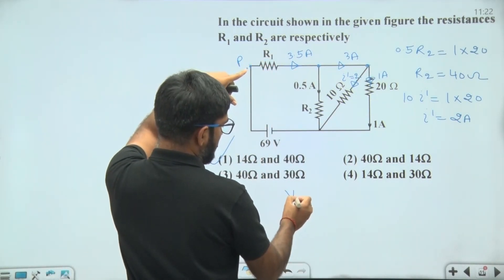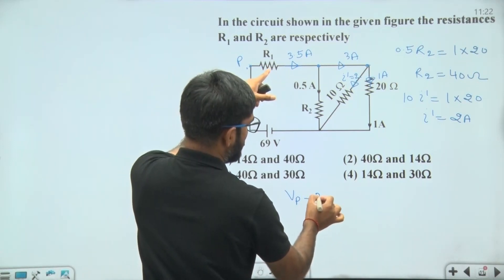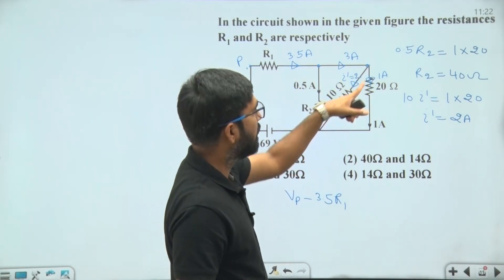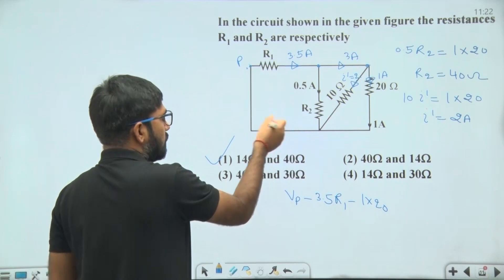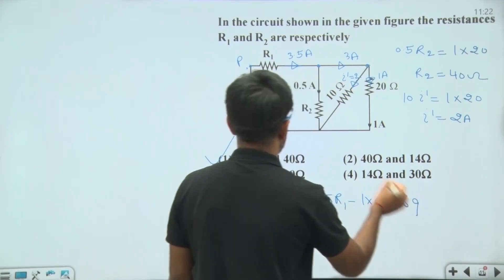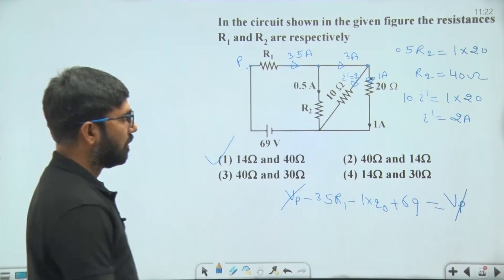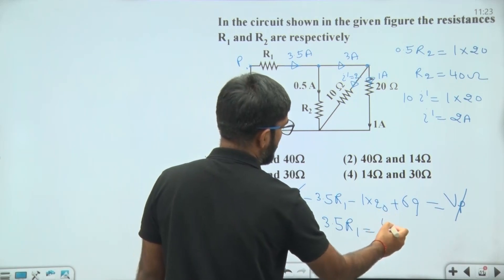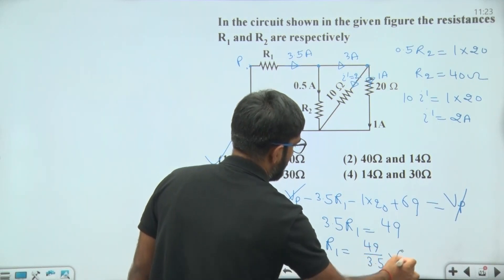Using KVL, starting from point P: in the direction of current, potential decreases by i × R1, so −3.5 × R1. Moving further, potential decreases by 1 × 20 = 20 volts. Then from the negative to positive terminal of the battery, potential increases by 69 volts. Returning to point P: solving gives 3.5 × R1 = 69 − 20 = 49, so R1 = 49 ÷ 3.5 = 14 ohm.